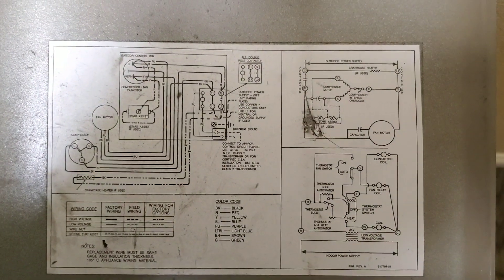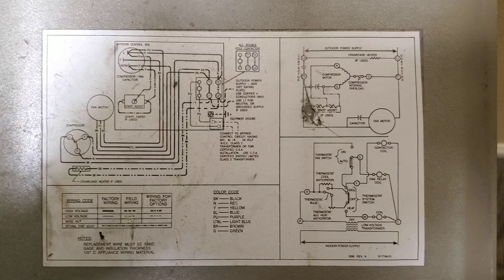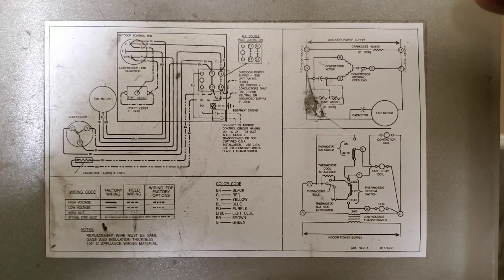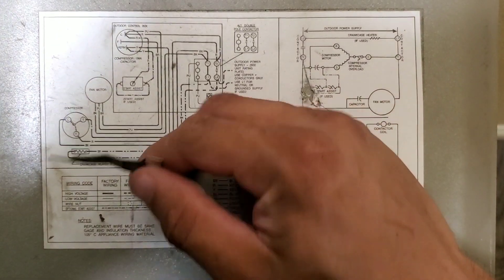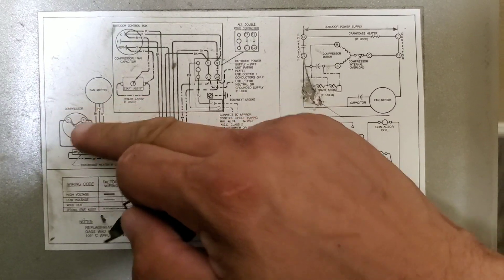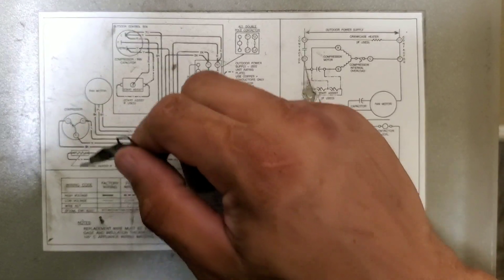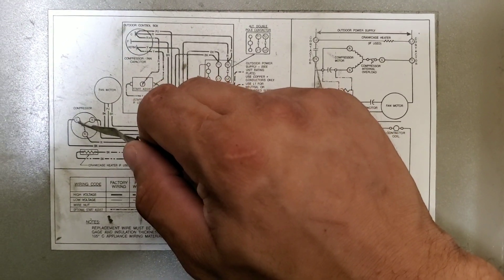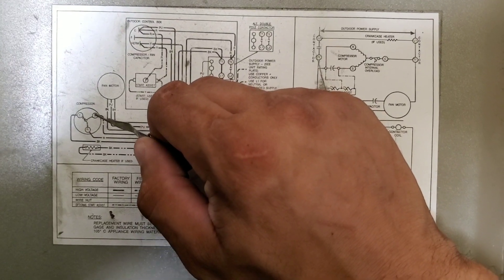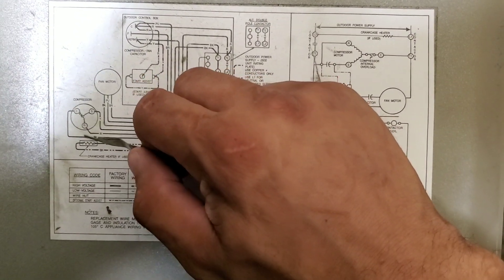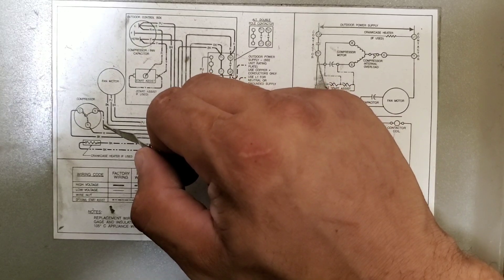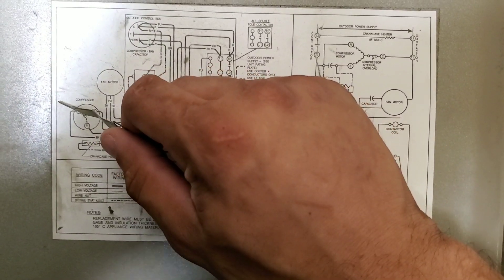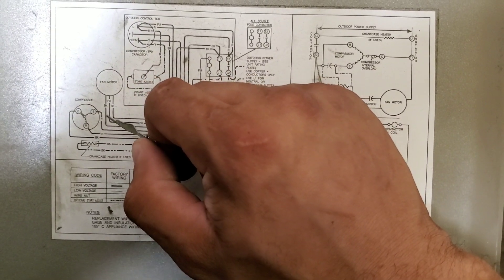Once you familiarize yourself with the different components, this will help you in your diagnosing and troubleshooting of the system. When you're wiring your compressor, you have three wires: your common, your run, and your start.